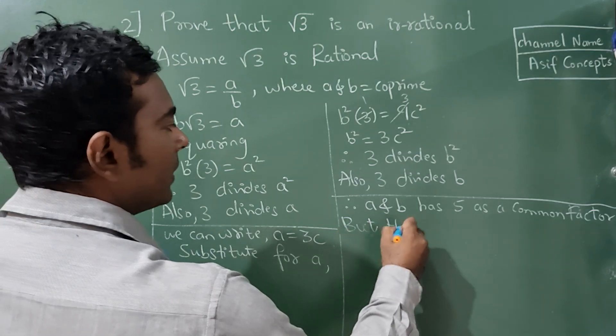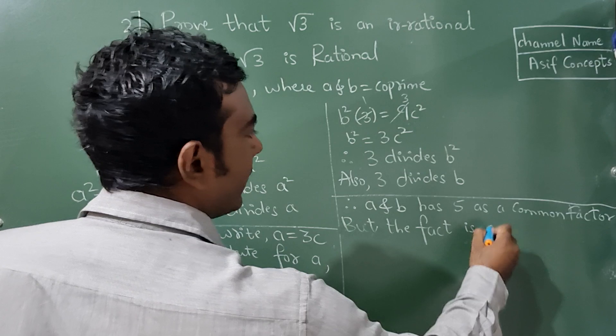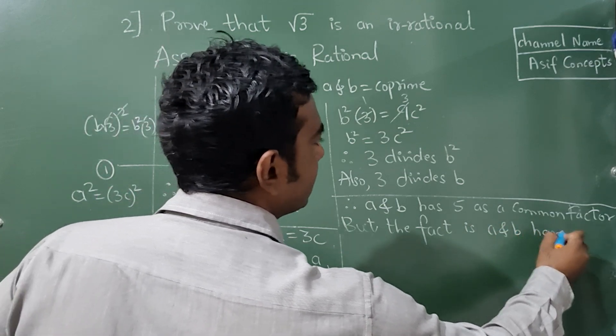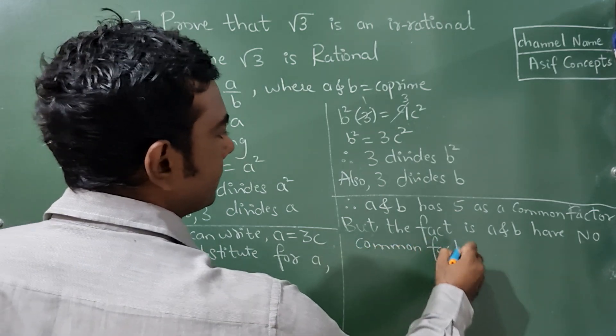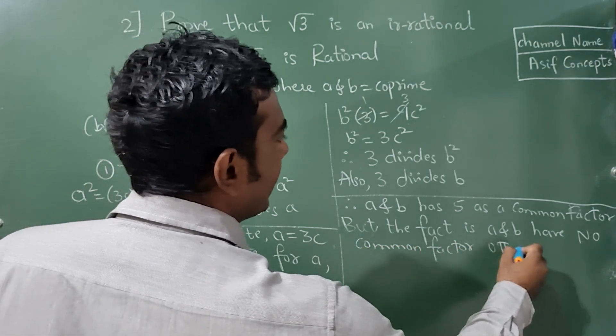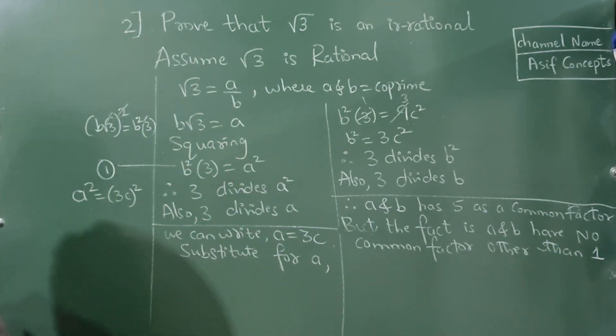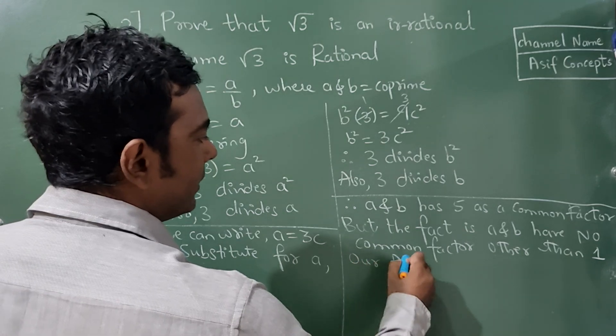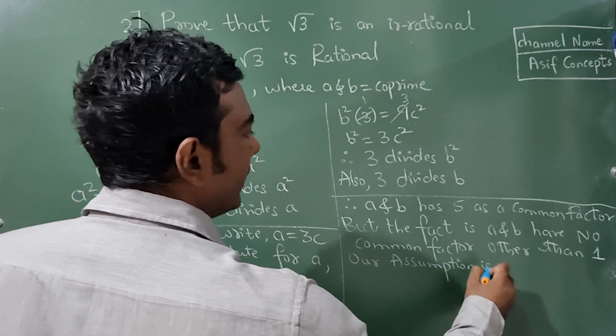But, the fact is, a and b have no common factor other than 1. Okay? Therefore, our assumption is wrong.